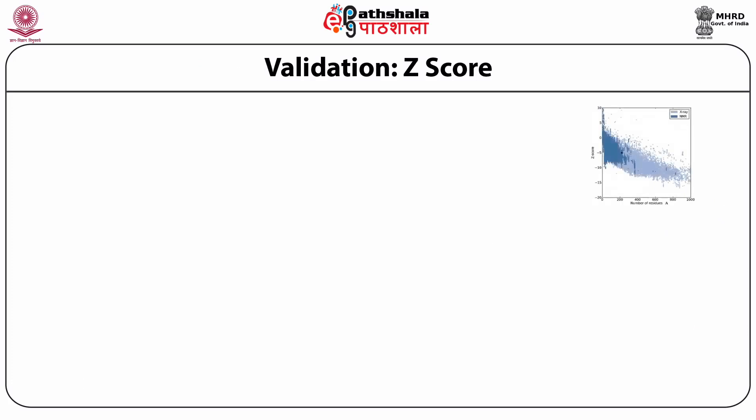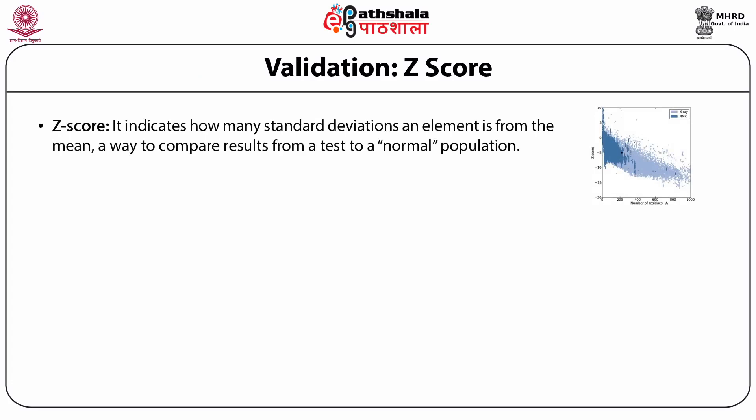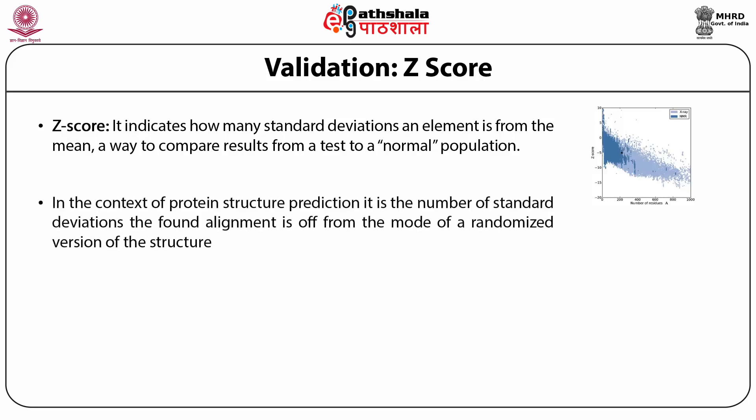Z-score is another tool for validating a protein structure. A Z-score indicates how many standard deviations an element is from its mean. In the context of protein structure prediction, it is the number of standard deviations the found alignment is off from the mode of the randomized version of the structure. Z-scores are a way to compare results from a test to a normal population, where Z equals (X minus mean) divided by S, the standard deviation.